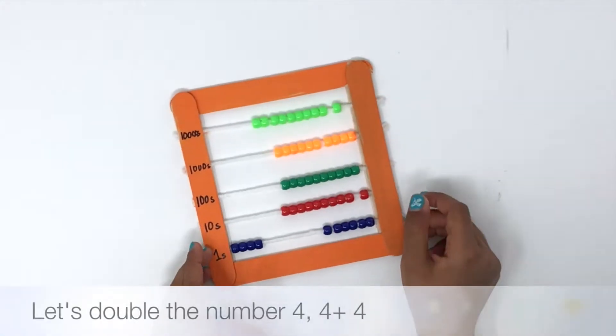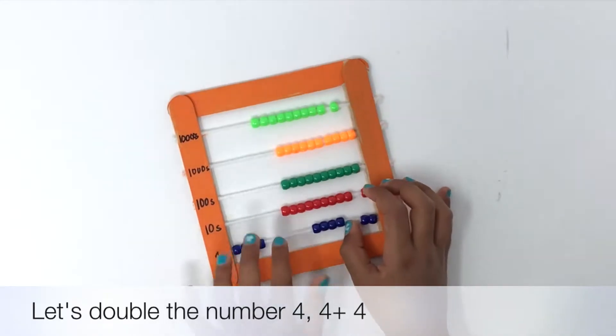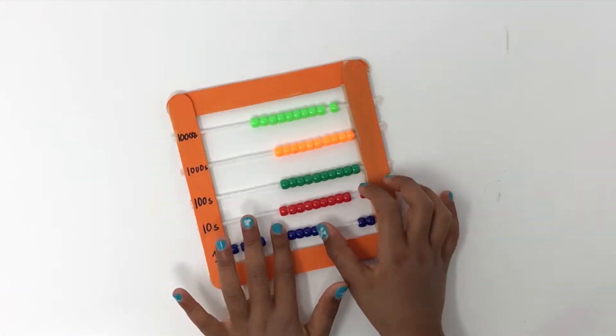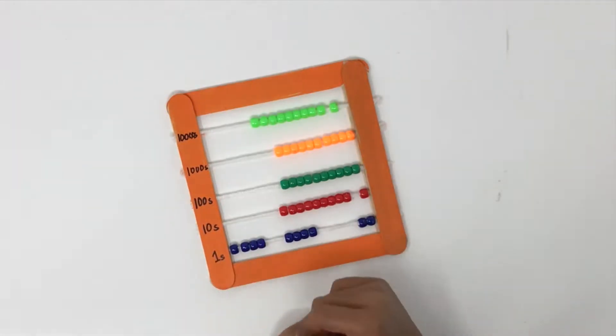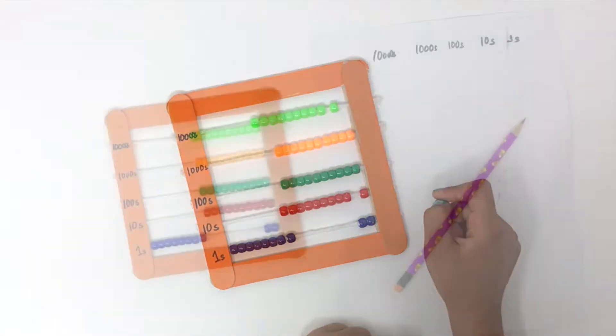Four. Now let's double 4 and 4. What number are we going to get? We already have 4 to the left. Push 4 more to the left and push them together. What number did you get? Eight.